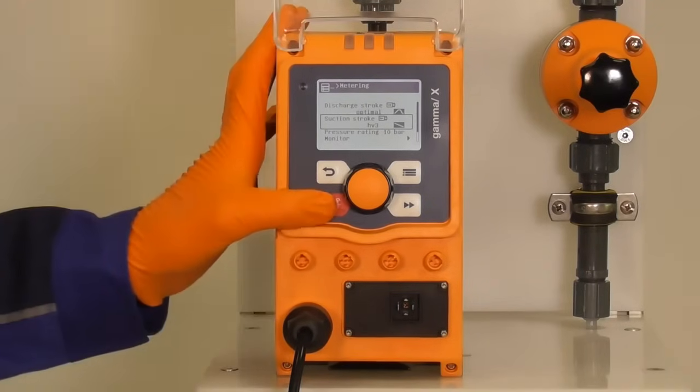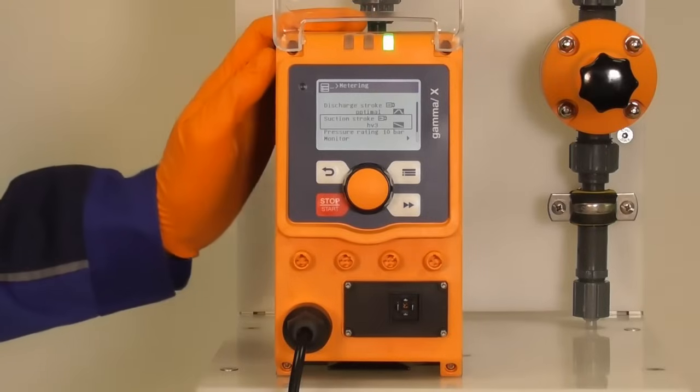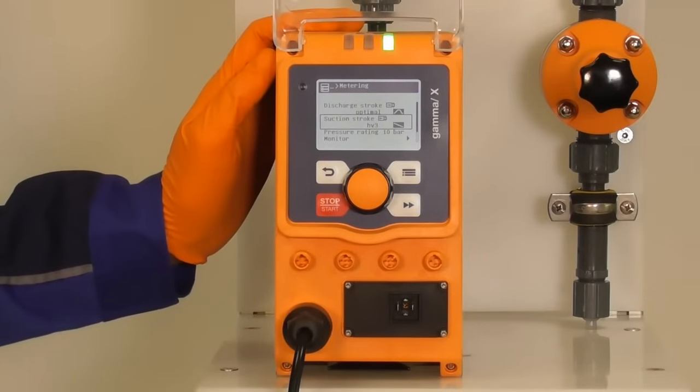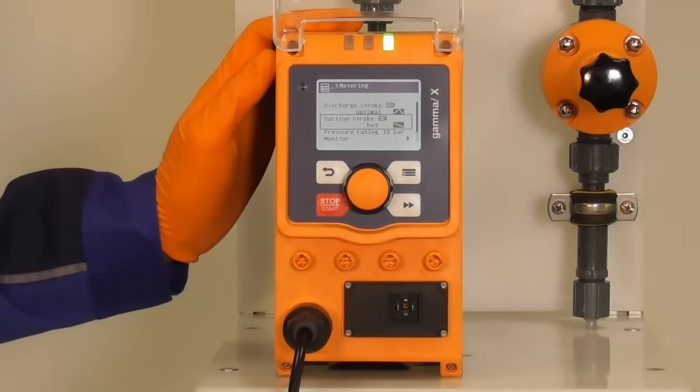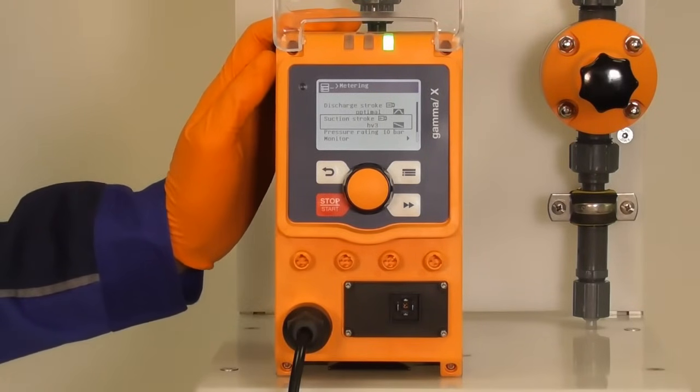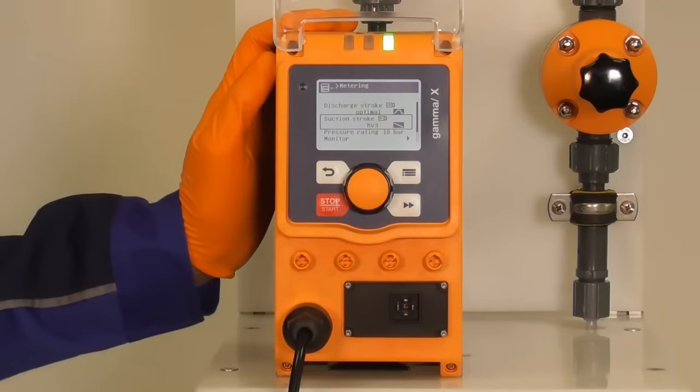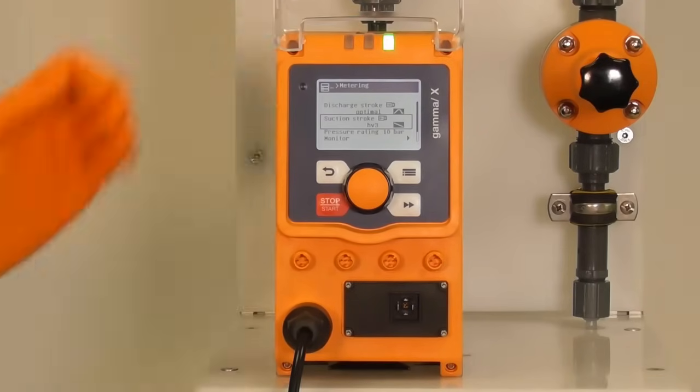When the viscosity goes above 3000 mPa I recommend to use a peristaltic pump. We have in our portfolio for example the DFXA, a peristaltic pump with which you can go up to 500,000 mPa.